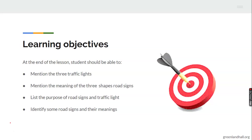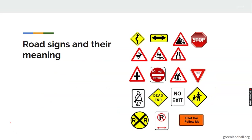At the end of this class, you should be able to: mention the three traffic lights, mention the meaning of the three types of route signs, state the purpose of route signs and traffic lights, and identify route signs and their meanings.